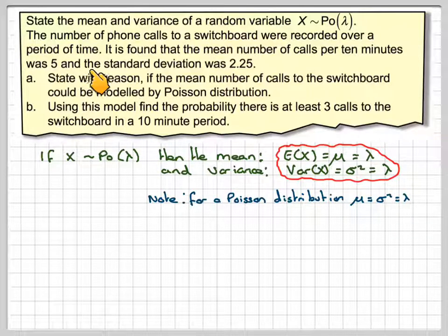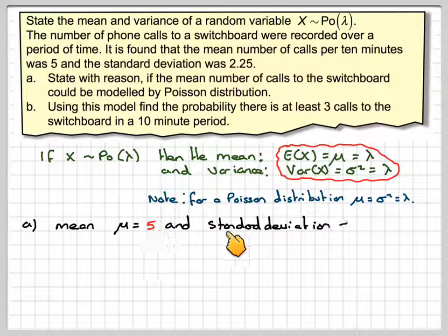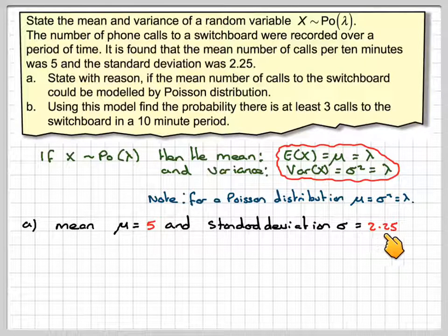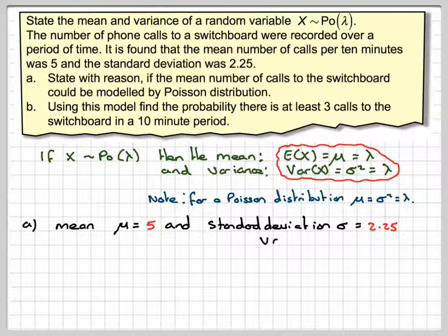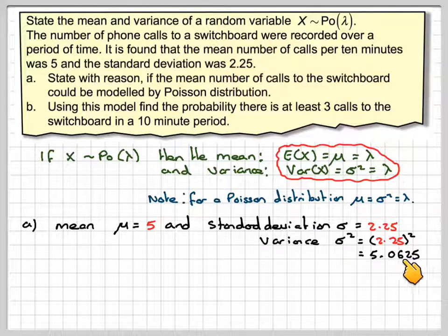So in this question we are given the mean and the standard deviation. The mean is equal to 5 and the standard deviation is equal to 2.25. Let's just have a look at the standard deviation for a minute. From that we can calculate the variance. The variance is going to be 2.25 squared. And if we work that out on our calculator we are going to get 5.0625.